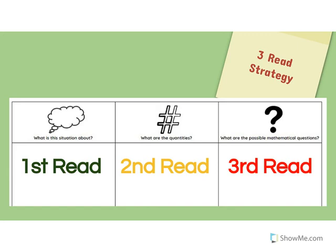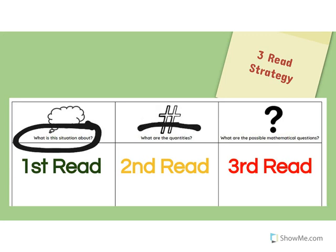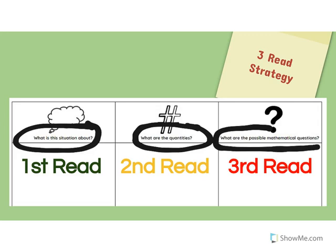We read a problem three times. On the first read, we want to know what is the situation about. On the second read, we're looking for what are the quantities. And on the third read, we're looking for what are the possible mathematical questions that we think could be asked in the problem.